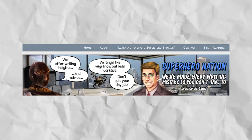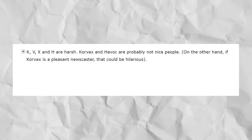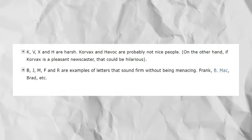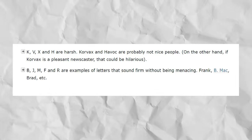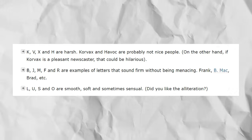So I started with the word 'valiant' and then transformed that into 'Valinor Strike.' When it comes to defining traits, a key thing to consider is the emotional valence of different letters — different sounds produce different emotional effects. Pulling from a really great 2007 article on superheronation.com, which has now sadly vanished from the internet: K, V, X, and H are harsh — Korvax and Havok are probably not nice people. B, J, M, F, and R are examples of letters that sound firm without being menacing. L, U, S, and O are smooth, soft, and sometimes sensual.